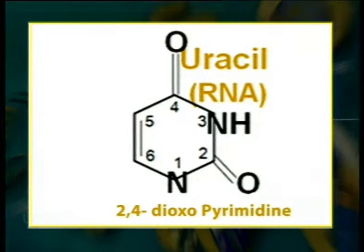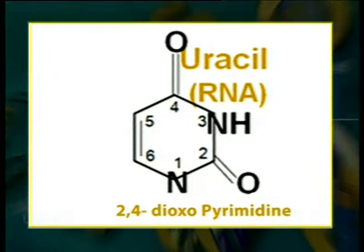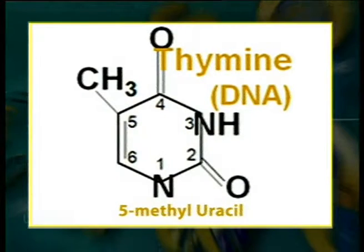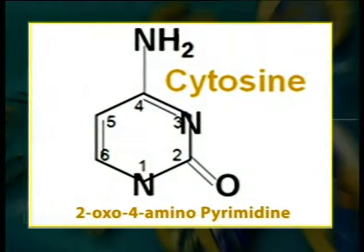It will be pertinent to mention that RNA contains uracil in place of thymine. Only rarely does thymine occur in RNA or uracil in DNA. In uracil, a keto group is present at the 2nd and 4th carbon, so it is 2,4-dioxopyrimidine. The only difference between uracil and thymine is the presence of a methyl group substituted at position 5; thus, thymine can also be called 5-methyluracil. In cytosine, a keto group is present at the 2nd carbon and an amino group at the 4th carbon, so it is 2-oxo-4-aminopyrimidine.